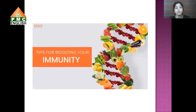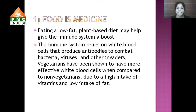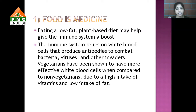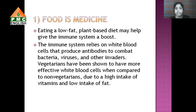Let us see a few tips to improve our immune system. Foremost is diet — there is no doubt food is medicine. Research says eating a low-fat diet helps. Fats can be classified as good fat and bad fat. Bad fats include refined oils and trans fats like bakery items, whereas good fats include ghee and unrefined oils like groundnut oil. We have to reduce bad fat and increase plant-based diet.